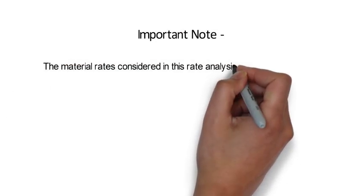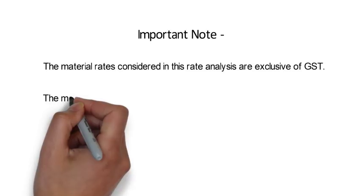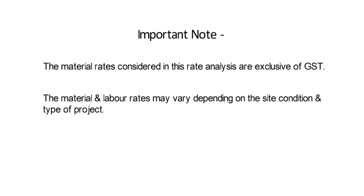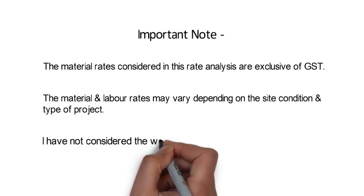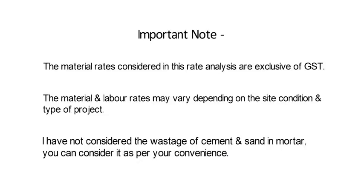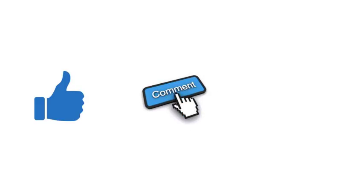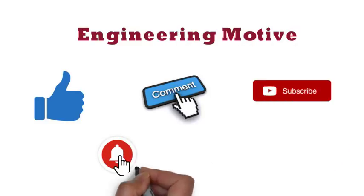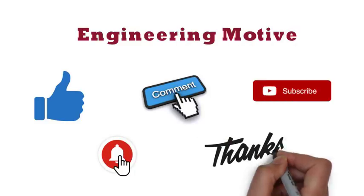Important note: the material rates considered in this rate analysis are exclusive of GST. The material and labor rates may vary depending on site condition and type of project. I have not considered the wastage of cement and sand in mortar — you can consider it as per your convenience. So friends, this was the rate analysis of AAC block masonry. If you like this video please hit the like button, give your comments, subscribe to the Engineering Motive channel, and press the bell icon for the latest updates. Thanks for watching.